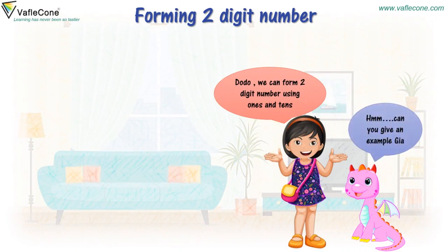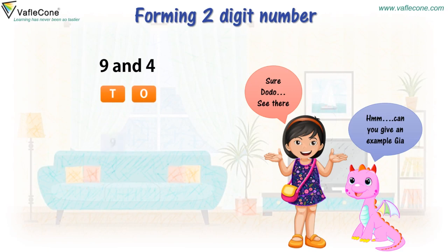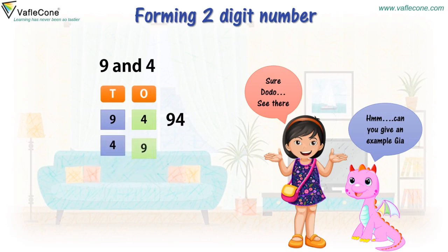Can you give an example, Gia? Sure, Dodo, see there. Nine and four are one digit numbers. But using them at tens and ones place will form two different two digit numbers. Using nine at tens and four at ones will form 94, and four at tens and nine at ones will form 49.